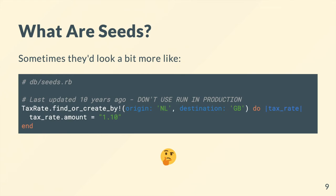Every once in a while I'll also come across something where some data needs to be in the database, but it's unclear when the seeds were made. Maybe another developer will come along and tell me that these are actually really, really out of date — don't run them. They'll give you a copy of production to use instead, and that's always a bit of a worry when I hear that.